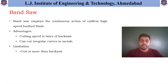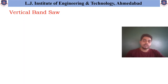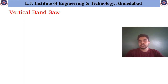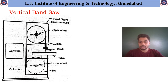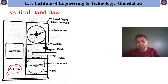Now we will discuss about the different types of band saw machines available. The first one is the vertical band saw. As the name suggests, this vertical band saw has an arrangement in which it will remove the material from the vertical direction. Let us have a look at the simple 2D figure of this vertical band saw. As you can see, the first part is the column, and this column supports all the elements available in the case of this vertical band saw.